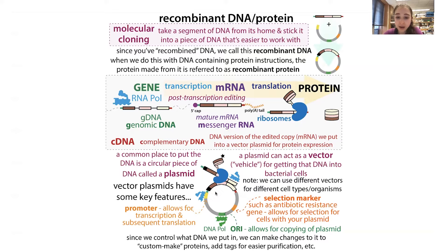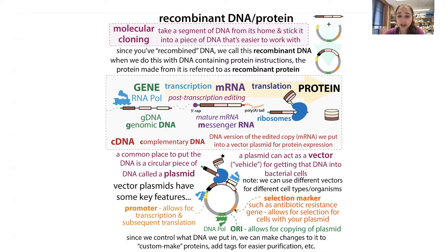This vector is going to have a few important things. If you're doing protein expression, you'll have a promoter sequence, which will allow for transcription and subsequent translation — which are coupled in bacteria. It's also going to have an origin of replication so that DNA polymerase can make copies. A plasmid replicates outside of the host DNA — it'll hang out outside. Then there's the really important selection marker, such as an antibiotic resistance gene, that allows for selection of the cells with your plasmid.